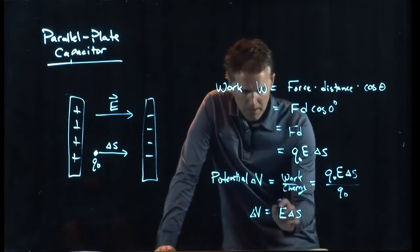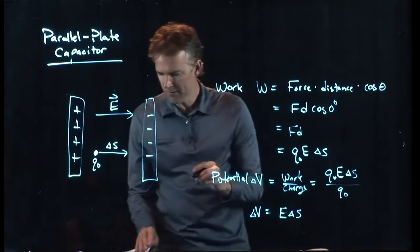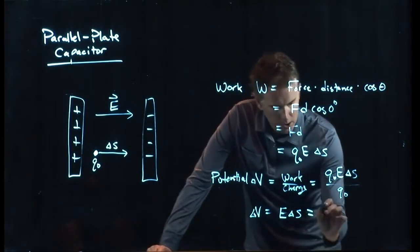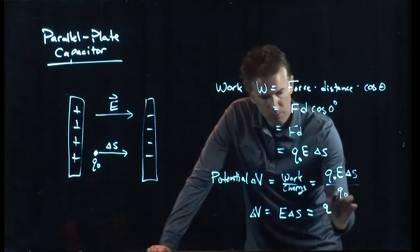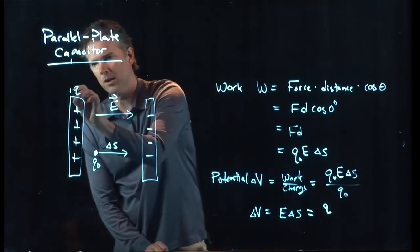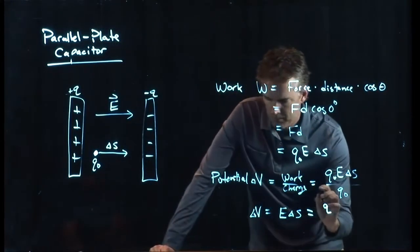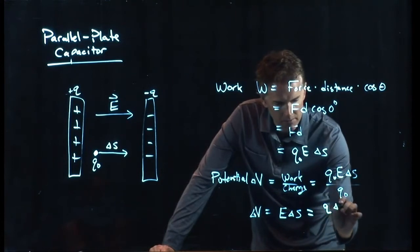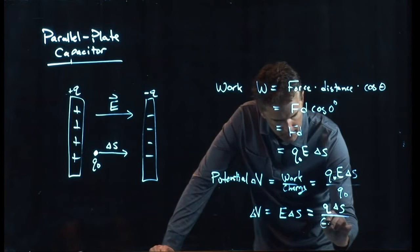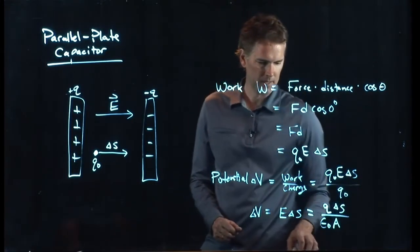But we need to remember what E is for the parallel plate capacitor. And what we said was E for the parallel plate capacitor is really Q, which is Q on the plates, plus Q on that one, minus Q on that one, Q times delta S. And then we had an epsilon naught A in the bottom. We just plugged in E for the parallel plate capacitor.